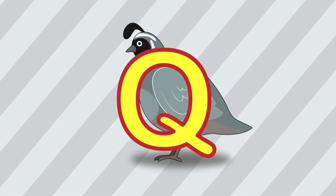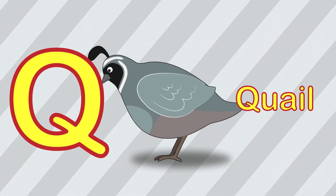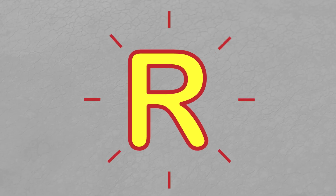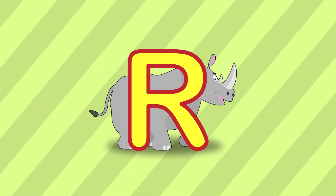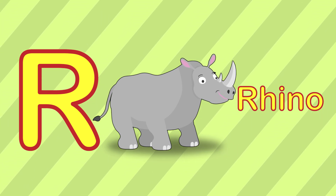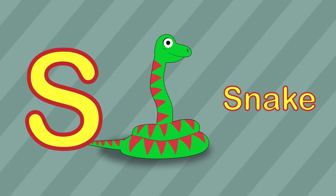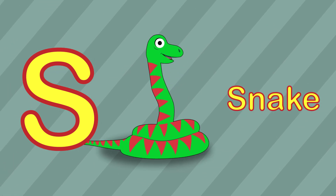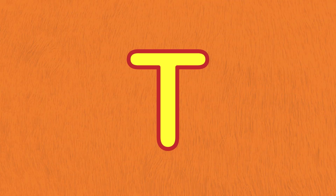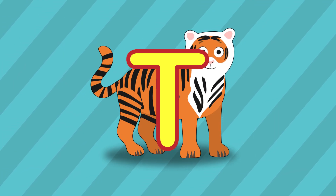P is for penguin. Q is for quail. R is for rhino. S is for snake. T is for tiger.